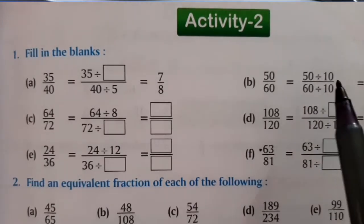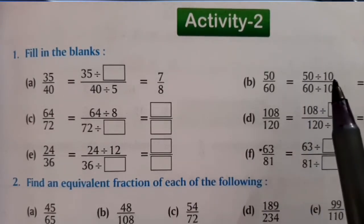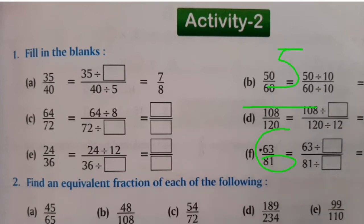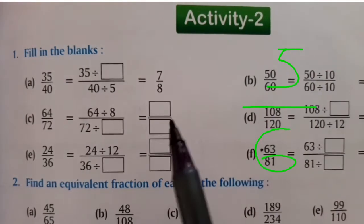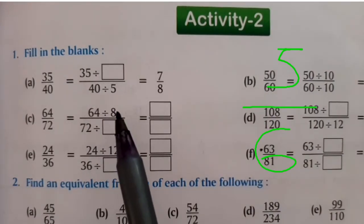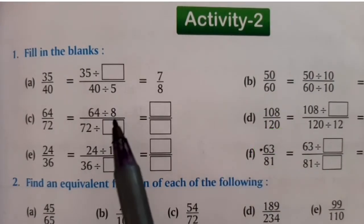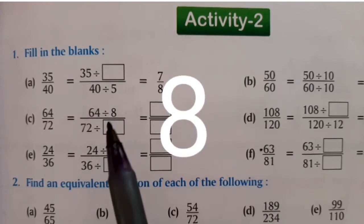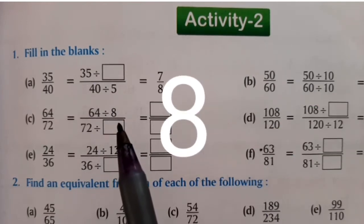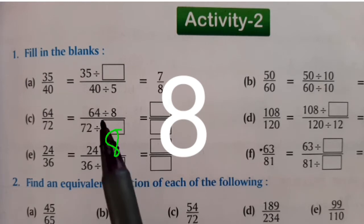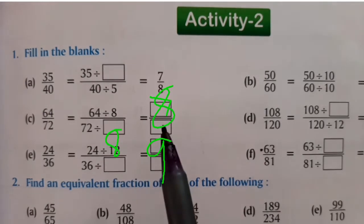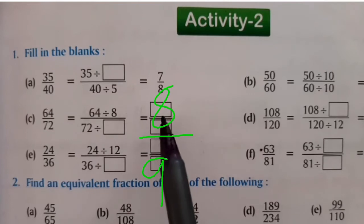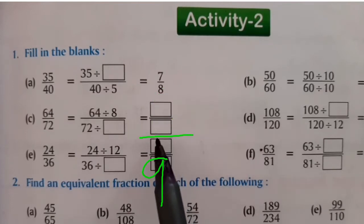Likewise, here it is very simple — just we have to divide. 50 divided by 10 is 5, and 60 divided by 10 is 6. Here it is also the same, students. You are dividing the numerator by 8, so the denominator also you have to divide by 8. 64 divided by 8 is 8 and 72 divided by 8 is 9. So here 8 upon 9 will come.